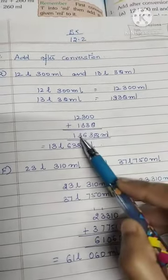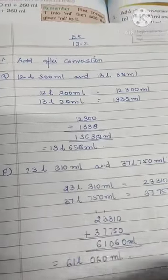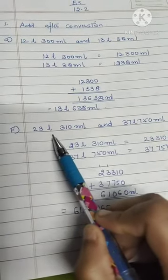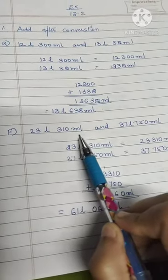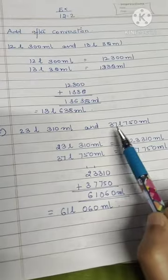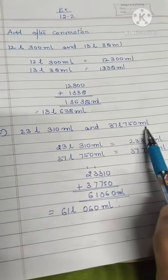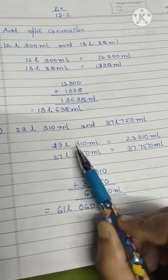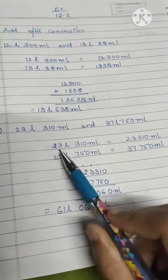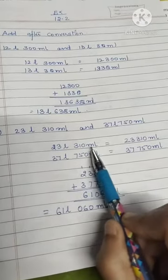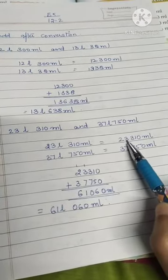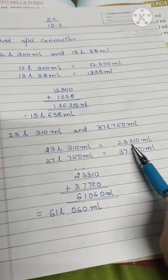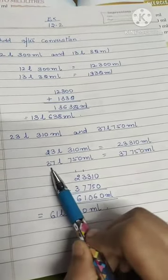Then again, coming to question number b: 23 liters 310 ml and 37 liters 750 ml. Again we will convert it. So for converting, we will write the numbers together. For 23 liters 310 ml, you will write it together, that will be 23,310 ml. Then 37 liters 750 ml, it will be 37,750 ml.